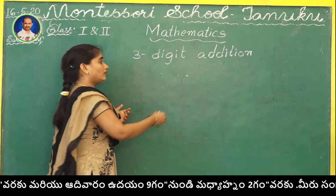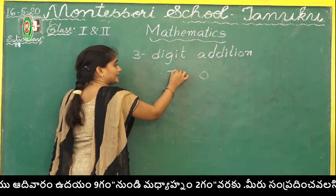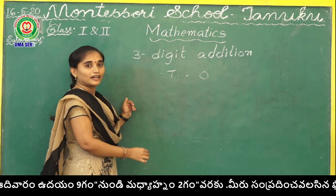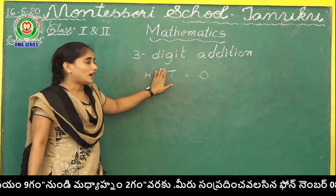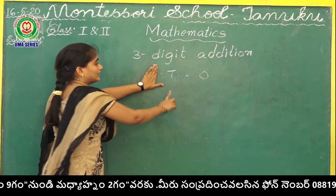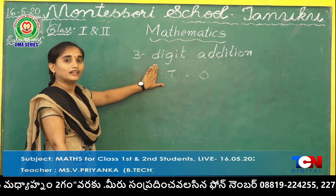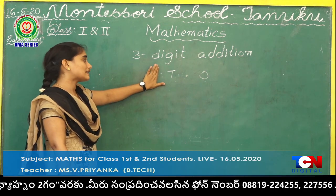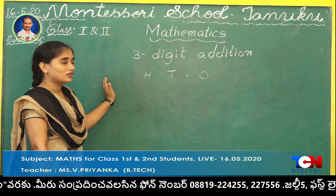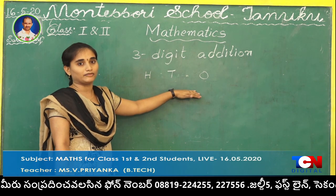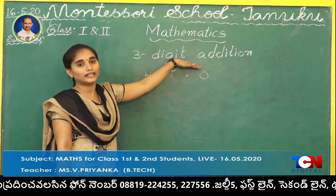Three-digit addition means what are the places that you will have, children? Already we learned about three-digit numbers. So we will have ones place, tens place, and hundreds place. Up to here we learned yesterday. Now just one more place is included, so it will become three-digit numbers — three-digit addition.